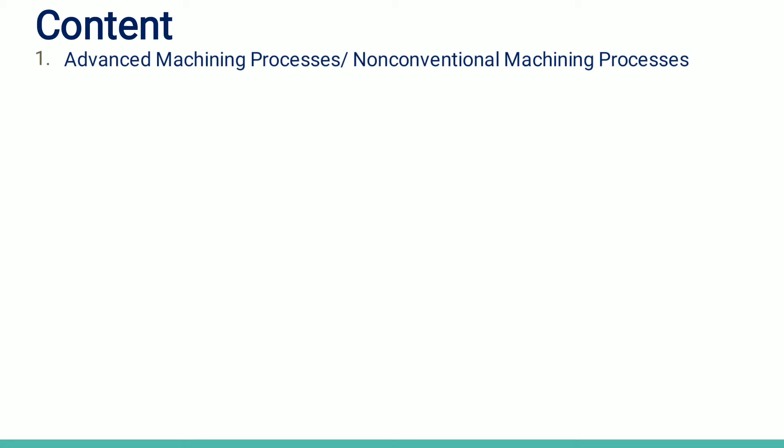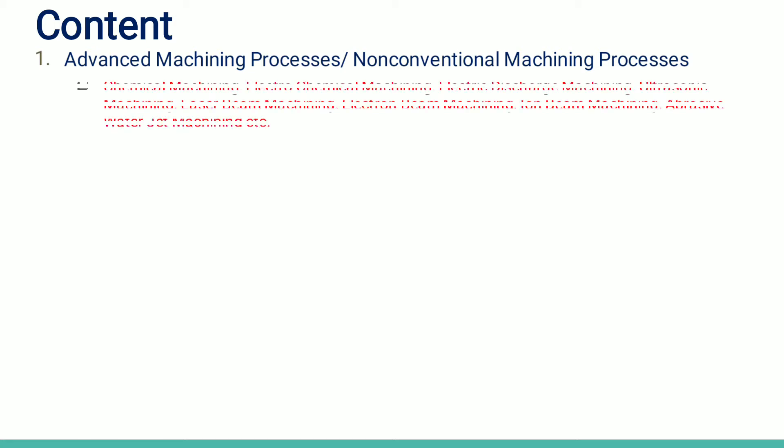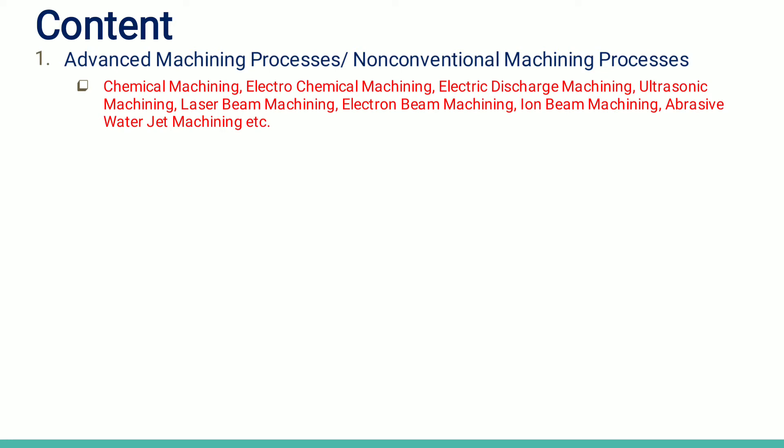We call previous processes conventional because they are completely mechanical — material is removed through tool-work piece contact and mechanics is fully involved. In contrast, the processes covered in advanced machining include chemical machining, electrochemical machining, electric discharge machining, ultrasonic machining, laser beam machining, electron beam machining, ion beam machining, and abrasive water jet machining.